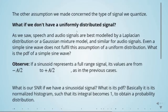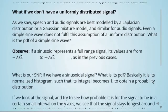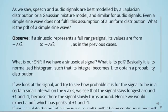What if we don't have a uniformly distributed signal? We calculated SNR for a uniform signal, but as noted, speech and audio signals are best modeled by a Laplacian distribution or a Gaussian mixture model. Even a sine wave doesn't have a uniform distribution. In the next example, we calculate the SNR for a sine wave. The sinusoid represents a full-range signal with values from minus a/2 to plus a/2, as in the previous cases. The first step is to calculate the PDF of a sine wave.